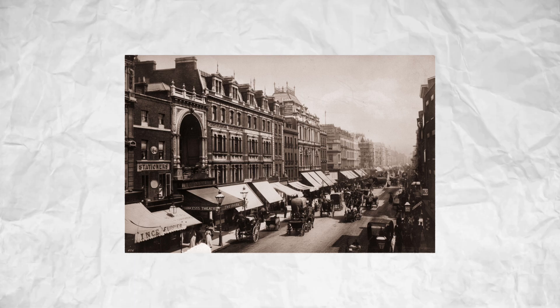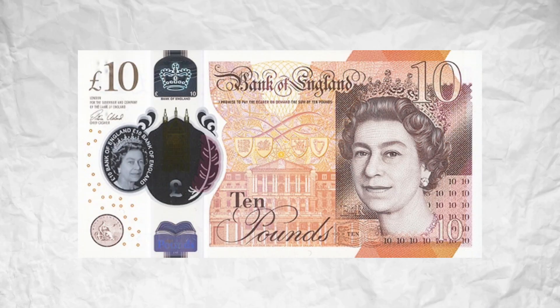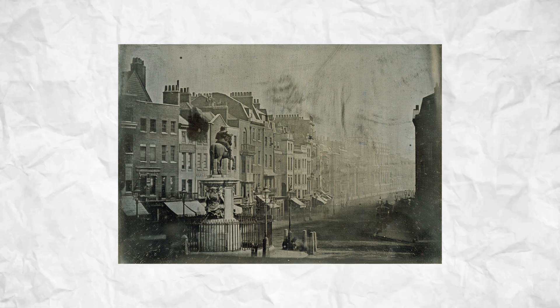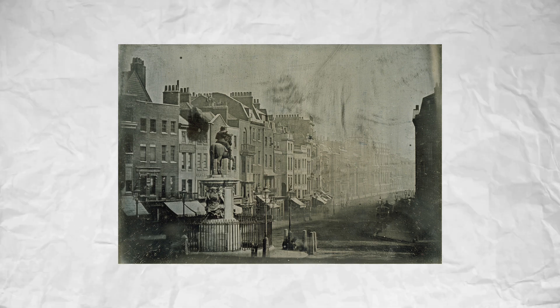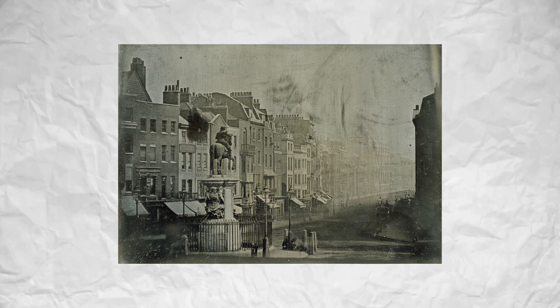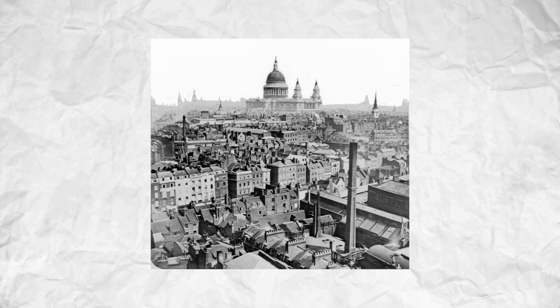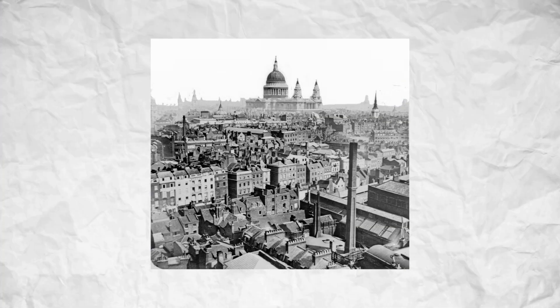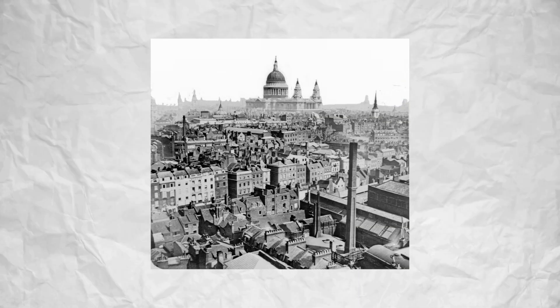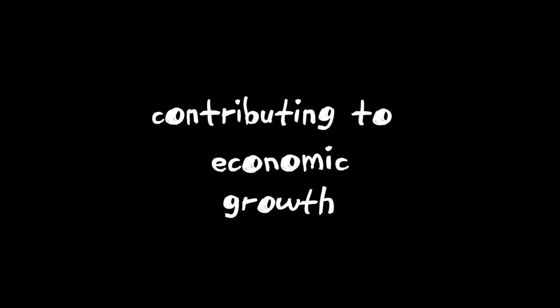Let's consider a practical example from history. In the 19th century, the British pound was backed by gold. This stability helped London become a major financial center, as traders and investors trusted the value of the pound. This confidence in a stable currency facilitated international trade and investment, contributing to economic growth.